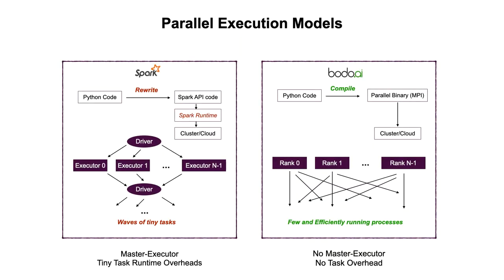In terms of architecture, the other systems use a master-executor architecture. Let's look at their workflow using Spark as a concrete example. The programmer has to rewrite the Python code in Spark's APIs. This code runs on a single process, and when the Spark runtime system is called with these high-level APIs, it will divide the work into tasks and send them to the cores across the cluster. When they compute their results, they send it back to the master. So the master is a bottleneck — we describe this flow as having waves of tiny tasks. With Bodo, however, Python code is compiled to a native parallel binary that doesn't need a heavy runtime system, and the code runs on all the processes as opposed to a single process. Each process owns a chunk of data and knows what to communicate and when to communicate. There is no master in the middle, and this is called the single-program multiple-data paradigm — the default architecture for all supercomputing applications.